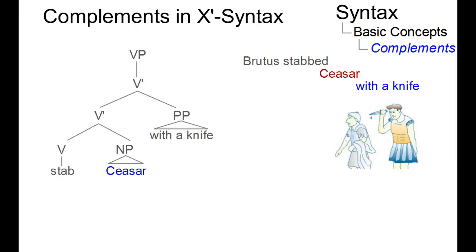So in 'Brutus stabbed Caesar with a knife,' the noun phrase Caesar, the object of stab, is a complement. It is a sister to the verb and a daughter to verb bar.